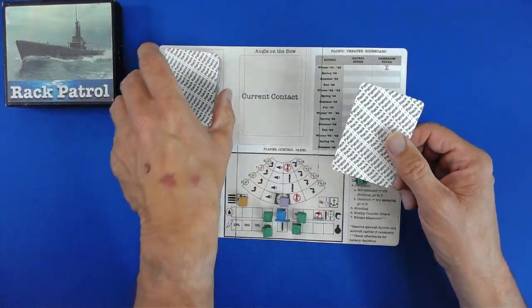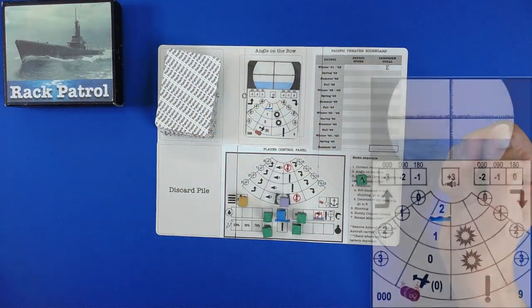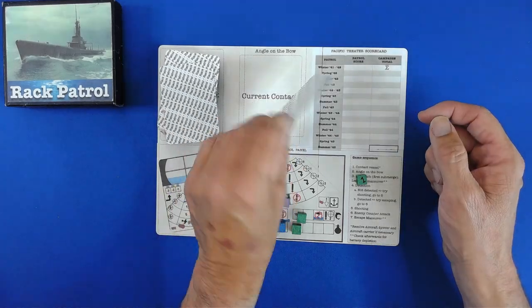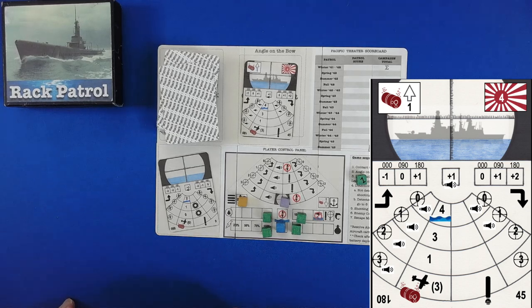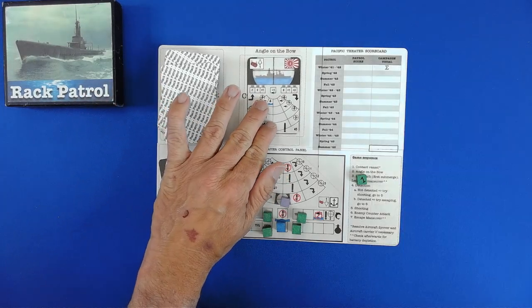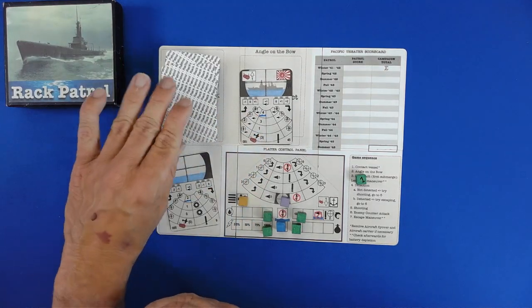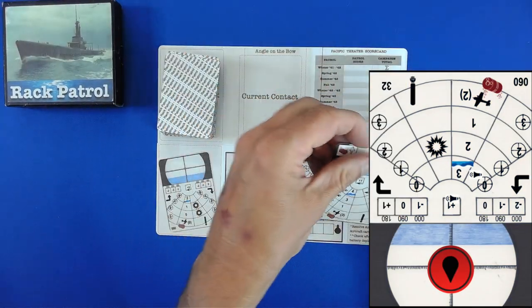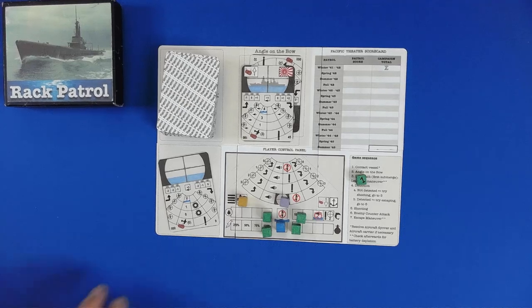We first of all have our operations deck. We turn one card over and nothing happens. So that's one, submerge. Second one is a ship. These are the guys who are after us. First thing we do is we draw a card to see angle on the bow. This is the direction at which we are approaching the target ship and it is 90 degrees. So that means it's going left to right or right to left. It really doesn't make a difference here.